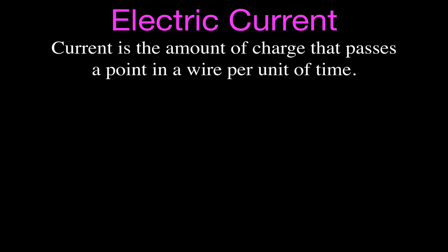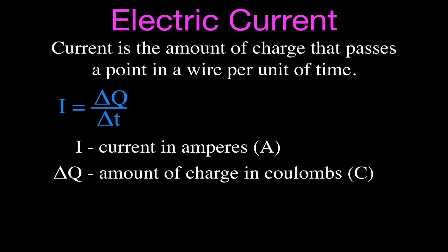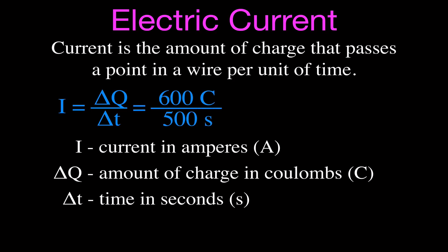Now let's do a little math and think about this quantitatively. Current is the amount of charge that passes a point in a wire per unit of time. We use the equation I equals delta Q over delta t, where Q is charge in coulombs and delta t is time in seconds. Remember, time must be in seconds. For example, if you have 600 coulombs of charge passing a point in 500 seconds, you get a current of 1.2 coulombs per second, which is 1.2 amperes.